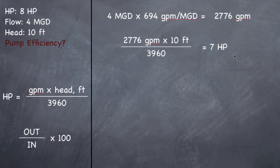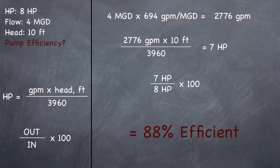In actuality, this pump is operating at 7 horsepower instead of 8 because it's pushing water upward, so you're losing efficiency. Taking 7 horsepower output divided by 8 horsepower input times 100 — this pump is 88% efficient. It's a fairly simple problem, just a new formula you have to memorize. It's not a difficult formula and it shouldn't give you too much trouble.